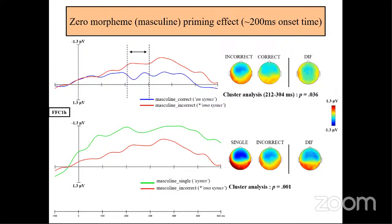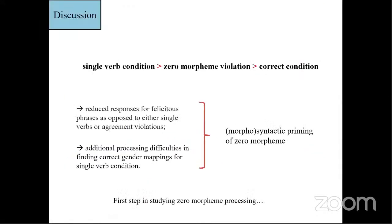And moreover, we see the reduced activation for the conditions with correct agreement. And if you look at the topology of this effect, you can see frontal and frontal-central distribution. So this effect, this difference in activity that we found is compatible with ELAN component as we said before.